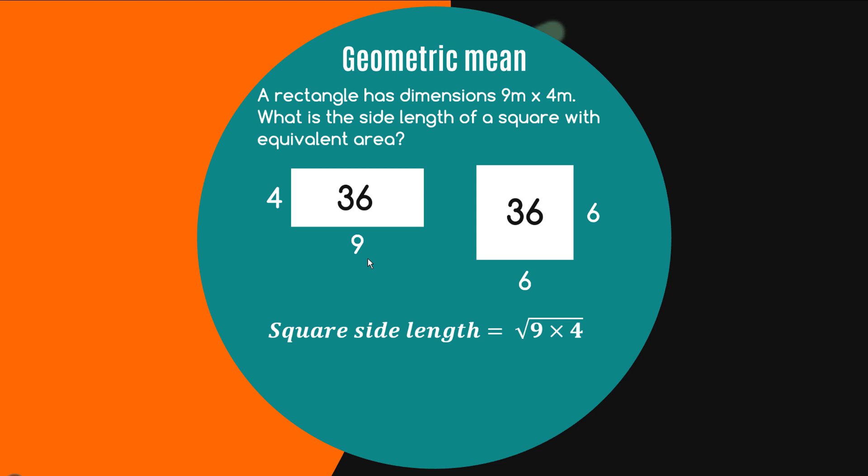So in this case six is actually going to be the geometric mean of four and nine but if you use the formula the formula tells us to take the nth root of the product of the two observations so four times nine we're going to multiply that together we're then going to take the square root because there's only two observations so the nth root becomes the square root the square root of 36 happens to be six.